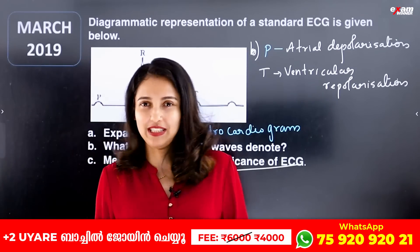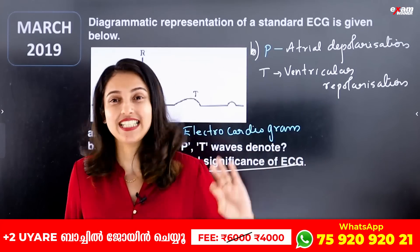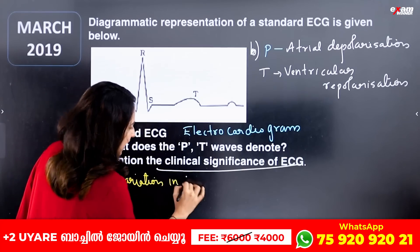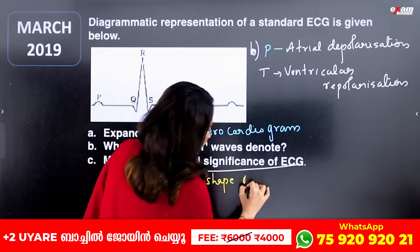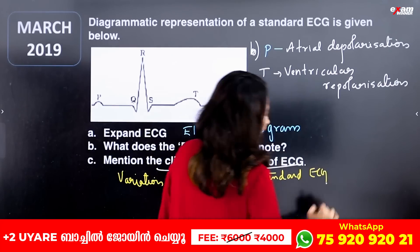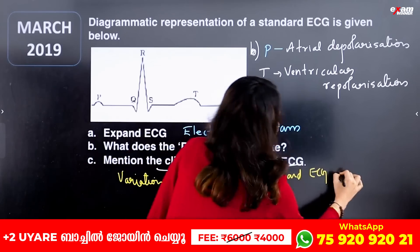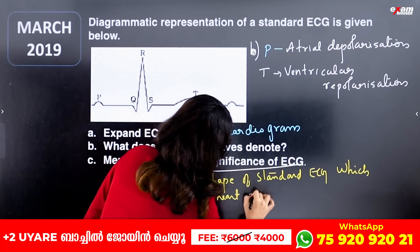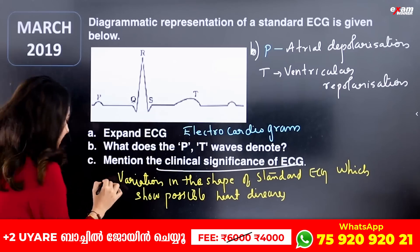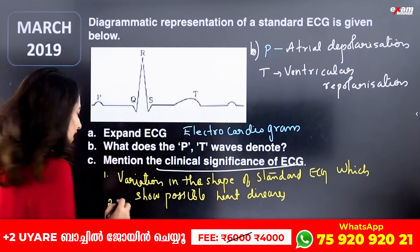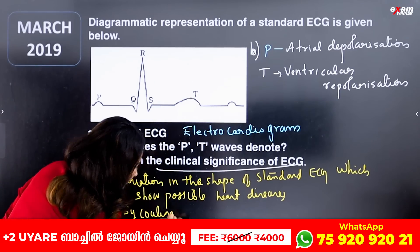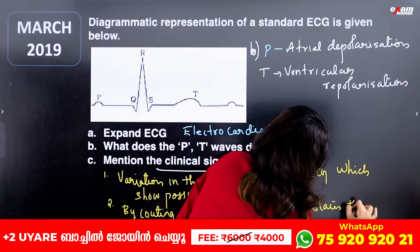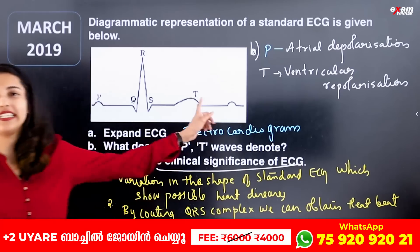What is the clinical significance of ECG? When we go to the doctor, they take an ECG. The first significance is that variation in the shape of a standard ECG indicates a heart abnormality. Second, by counting the QRS complex, we can determine the heartbeat rate.